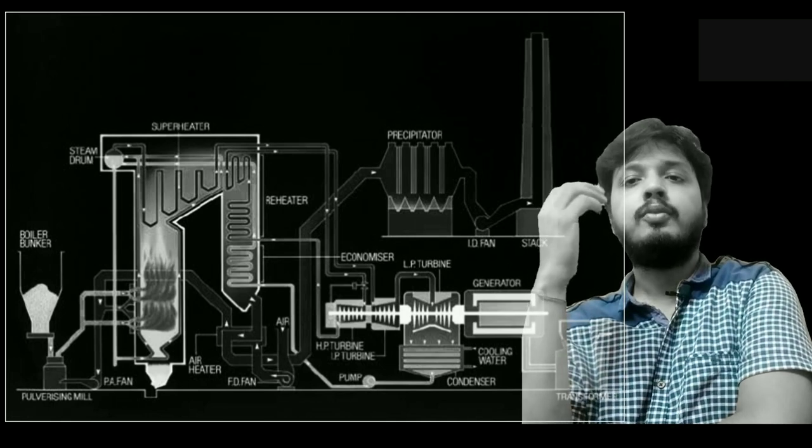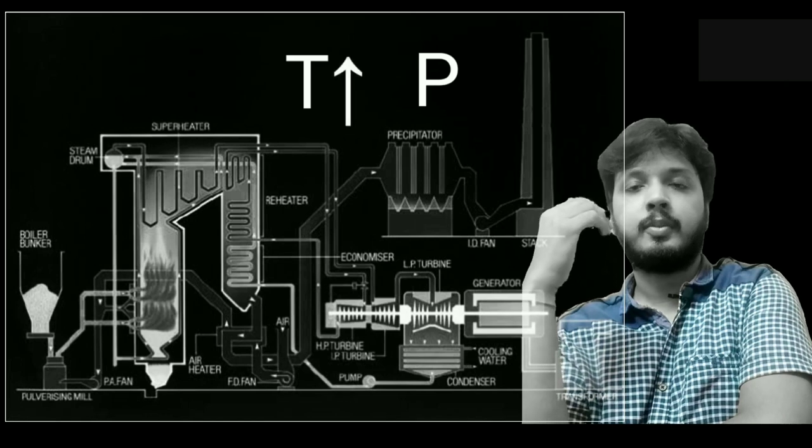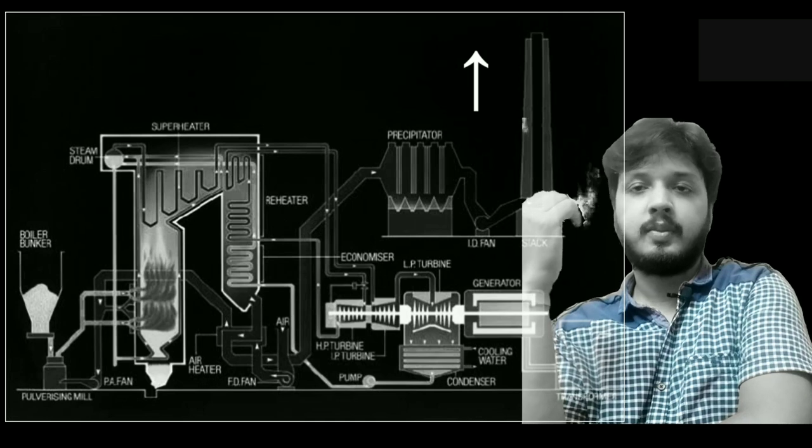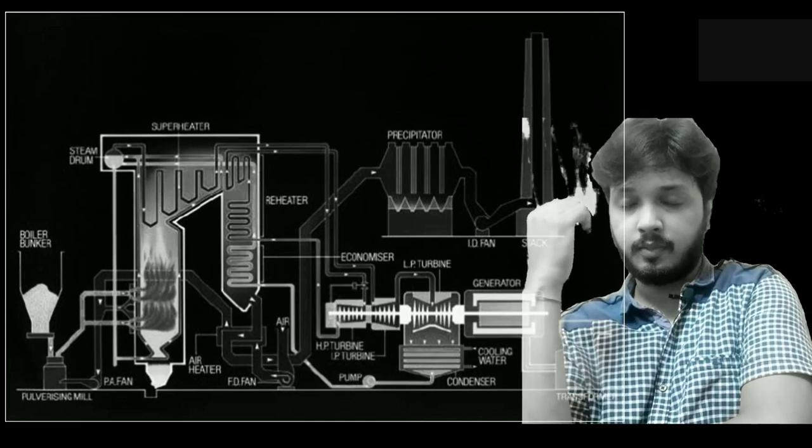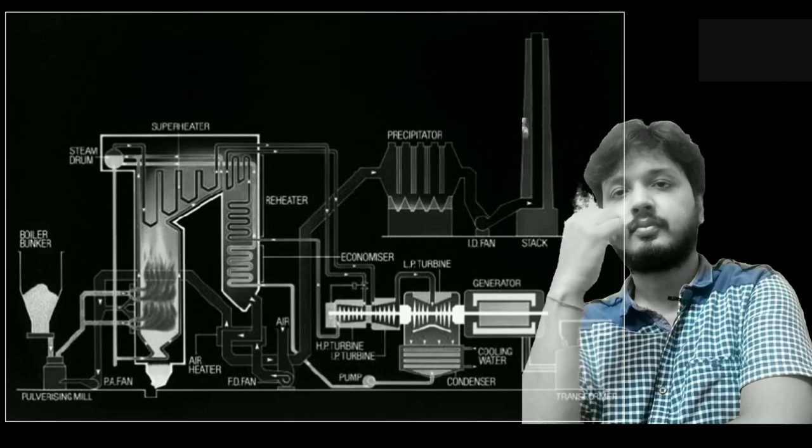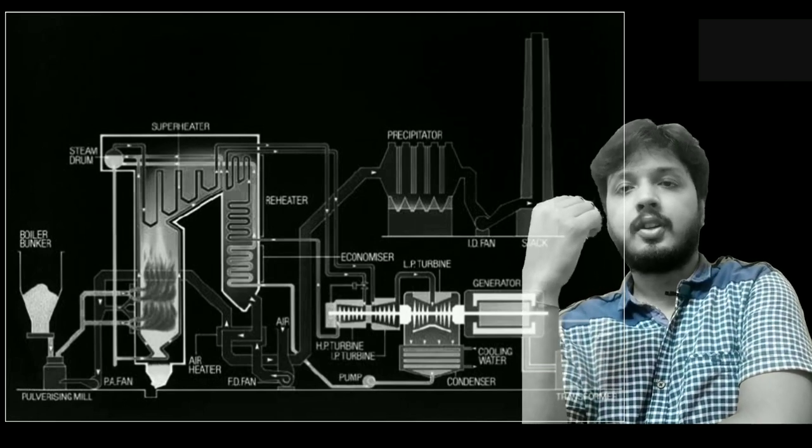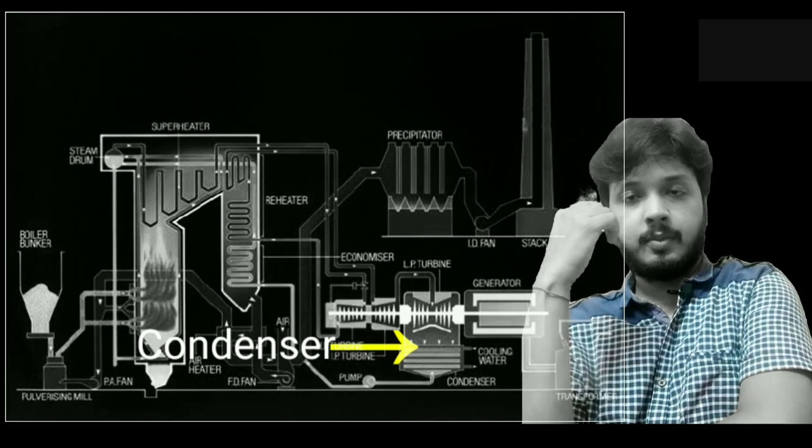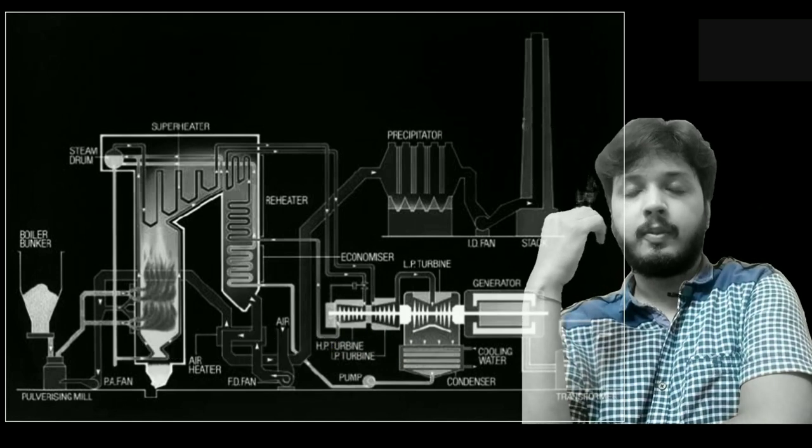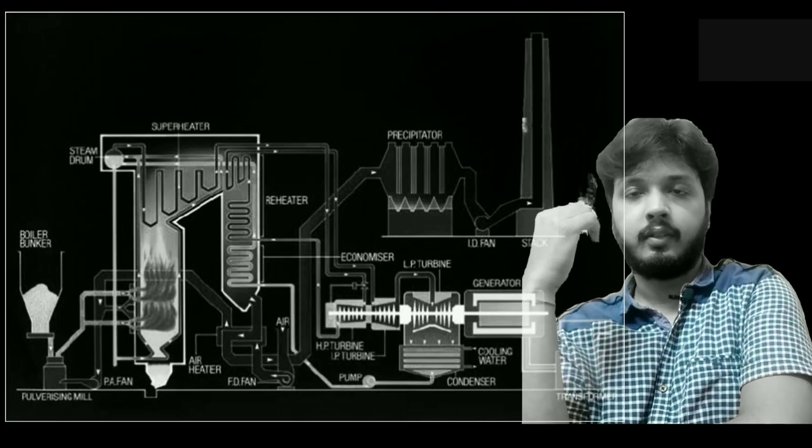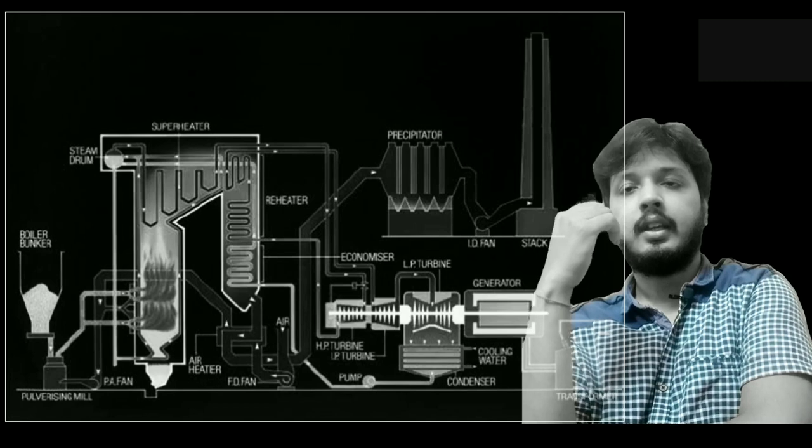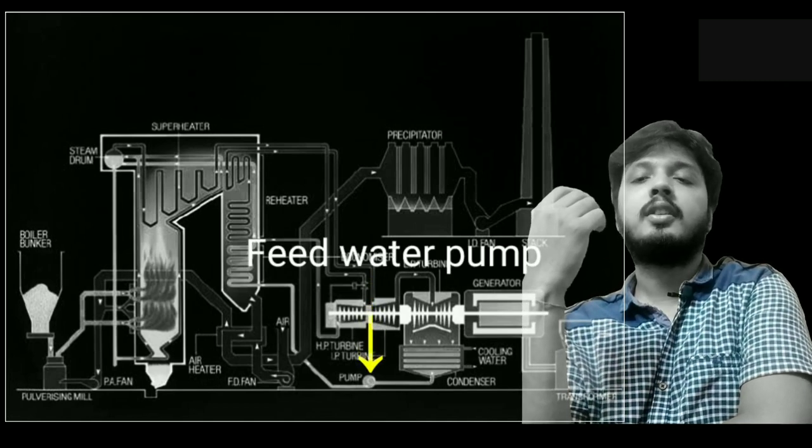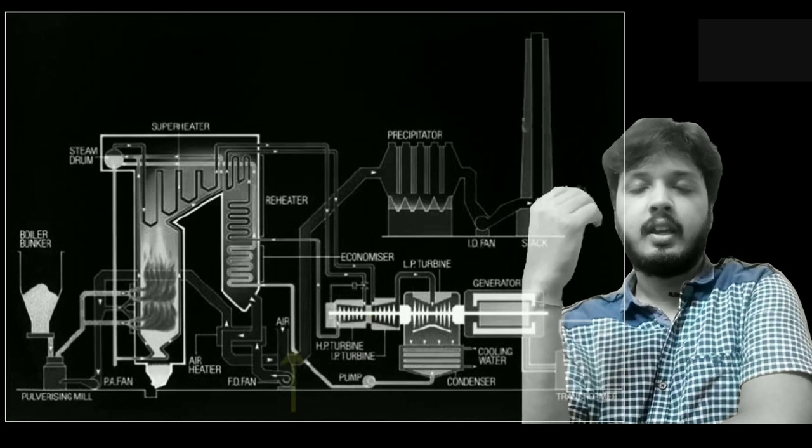If we want to reuse the steam, we have to increase the temperature and the pressure of the steam again. Because after passing through the turbine blades, the temperature and pressure of the steam decreases. To increase the pressure and temperature, first we pass it through a condenser. In the condenser, coming in contact with the cold water pipe, the steam condenses to water. The steam releases latent heat and becomes water. This water is fed to the feed water pump. The feed water pump increases the pressure of the water and sends it to the boiler.